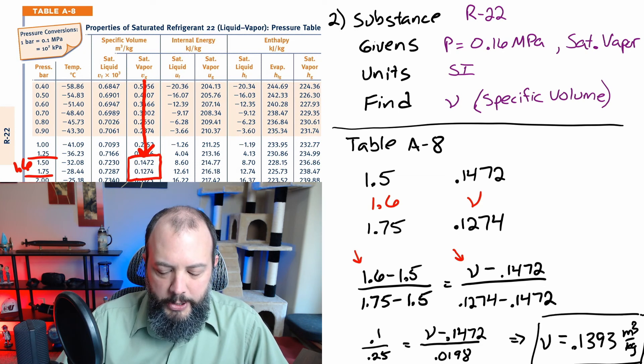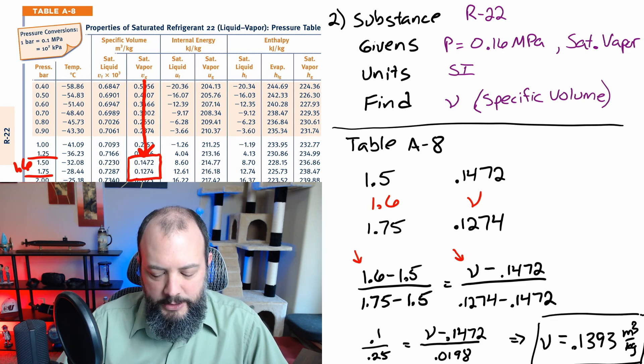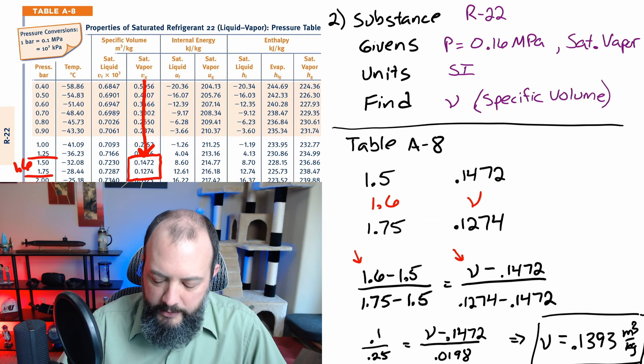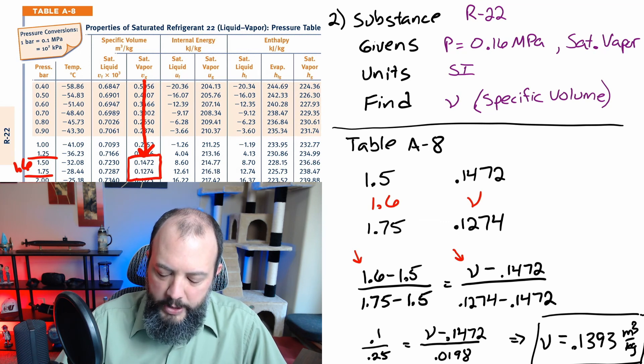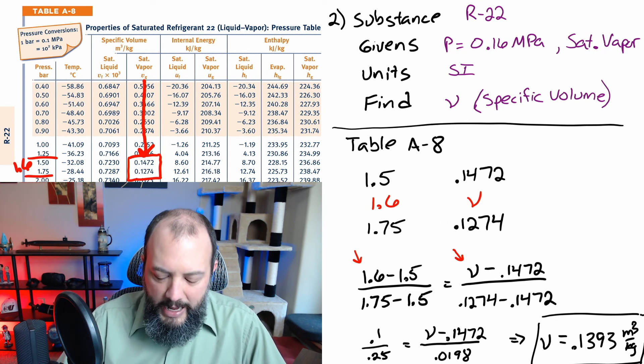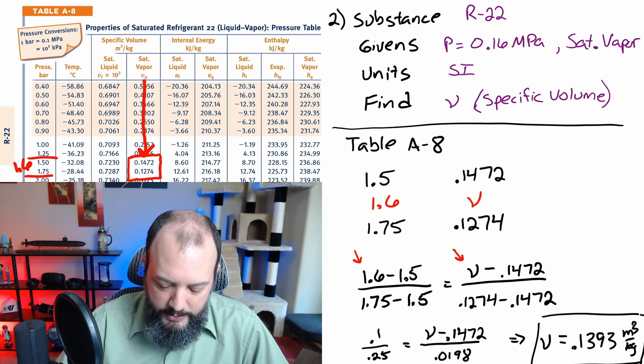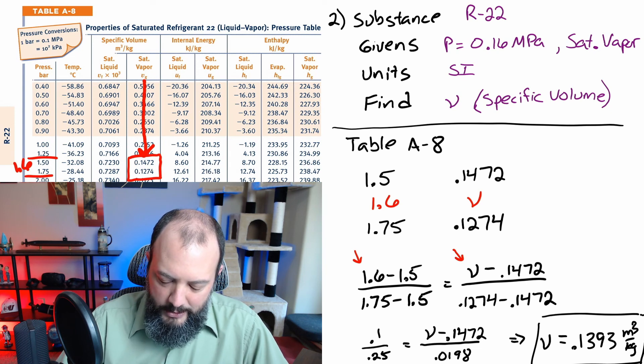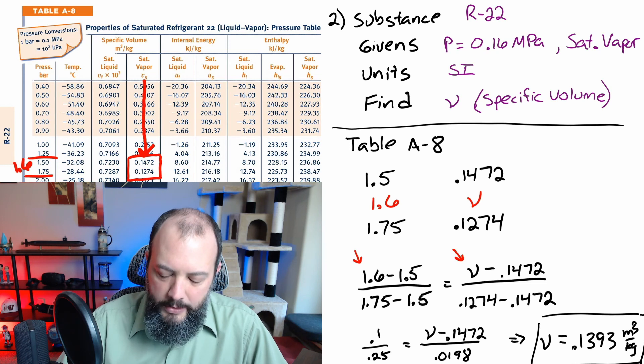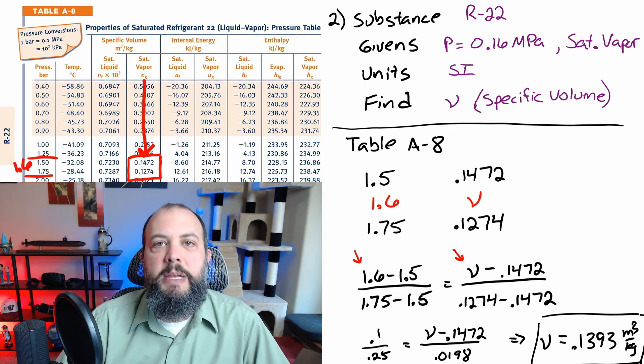To check this answer we'll notice that the 0.16 0.16 is pretty close to the middle of 1.5 to 1.75 but a little bit closer to 1.5. So our final answer 0.1393 should be kind of close to the middle but slightly closer to 0.147. And that does make sense. Right halfway in between would be approximately 0.137. So we're a little bit higher than 0.137, a little closer to 0.1472. And so that does make sense.